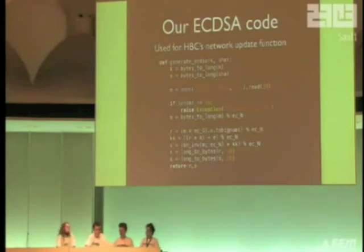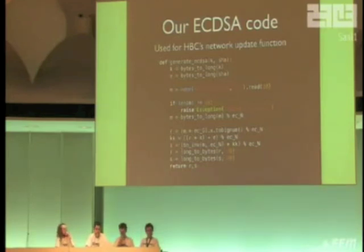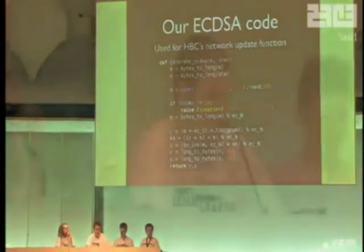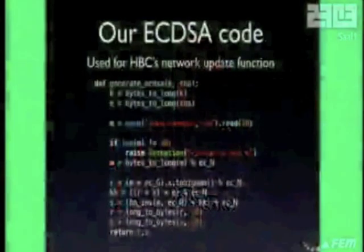We actually used ECDSA in the Homebrew Channel's network update functions so that someone can't own your Wii through a man-in-the-middle attack. This is how we do it: you can see the m times G math there, and for m we read cryptographically secure random numbers from /dev/random on Linux — that's what you're supposed to do, and what Sony does as well.